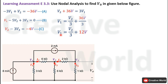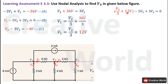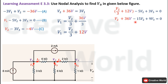Substituting V1 into Equation B: (V2/3 + 12V) minus 5V2 plus 3V3 equals 0. Multiplying through by 3 gives V2 plus 36V minus 15V2 plus 9V3 equals 0. Combining the V2 terms gives minus 14V2, and placing the constant on the other side yields minus 14V2 plus 9V3 equals minus 36 V.